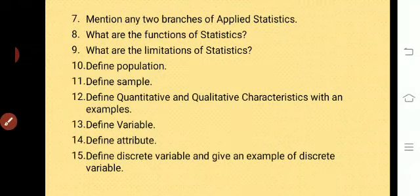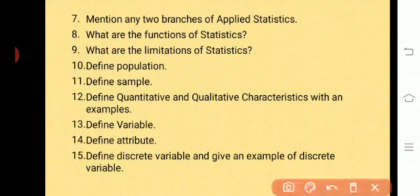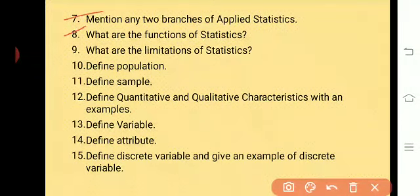Question number seven: mention any two branches of applied statistics. There are different branches such as statistics in biology called biostatistics, or statistics in economics called econometrics, and so on — write any two branches of applied statistics. Question number eight: what are the functions of statistics? This question is also very important.